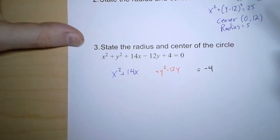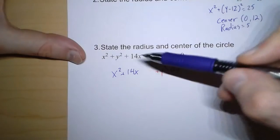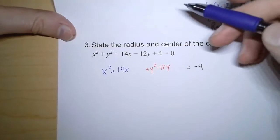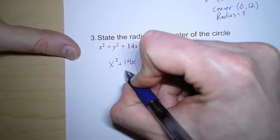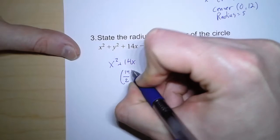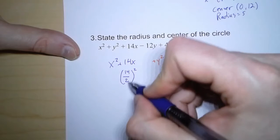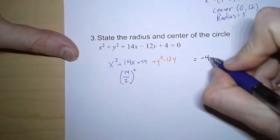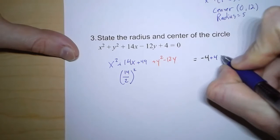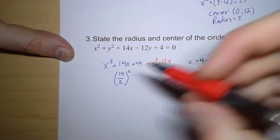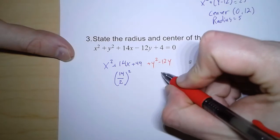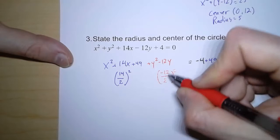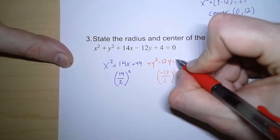Now we're going to do something called completing the square. That is, we want to take this expression so that we can write it in this form. So to do that, we take 14, this number right here, we divide by 2 and square it. So 14 divided by 2 is 7, squared is 49. Now if I add it to one side, I have to add it to the other side. Now I'm going to complete the square over here by taking this number, negative 12 divided by 2, and squaring that. So that's negative 6 squared, so that's plus 36.